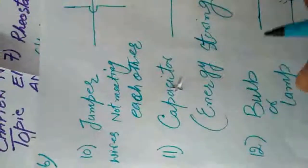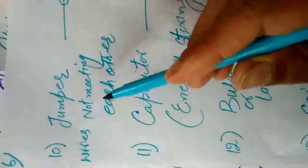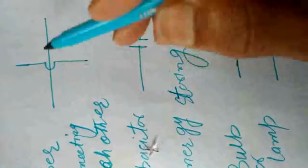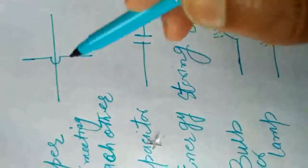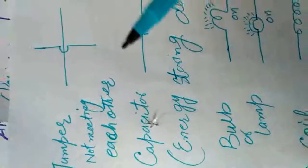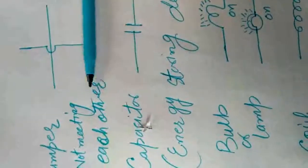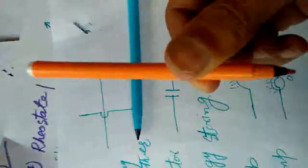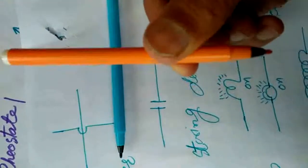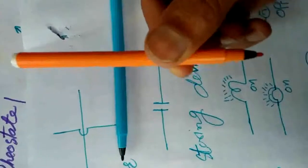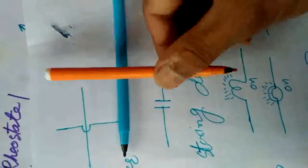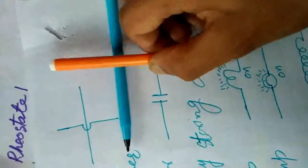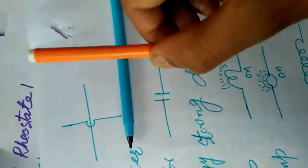The tenth component is the jumper. A jumper is when wires are not meeting each other. If one wire passes over another wire but they are not connected to each other, it is called a jumper. For example, if we place one pen over another without connecting them, they appear to meet but do not — this is a jumper. If they are connected, it becomes a junction.